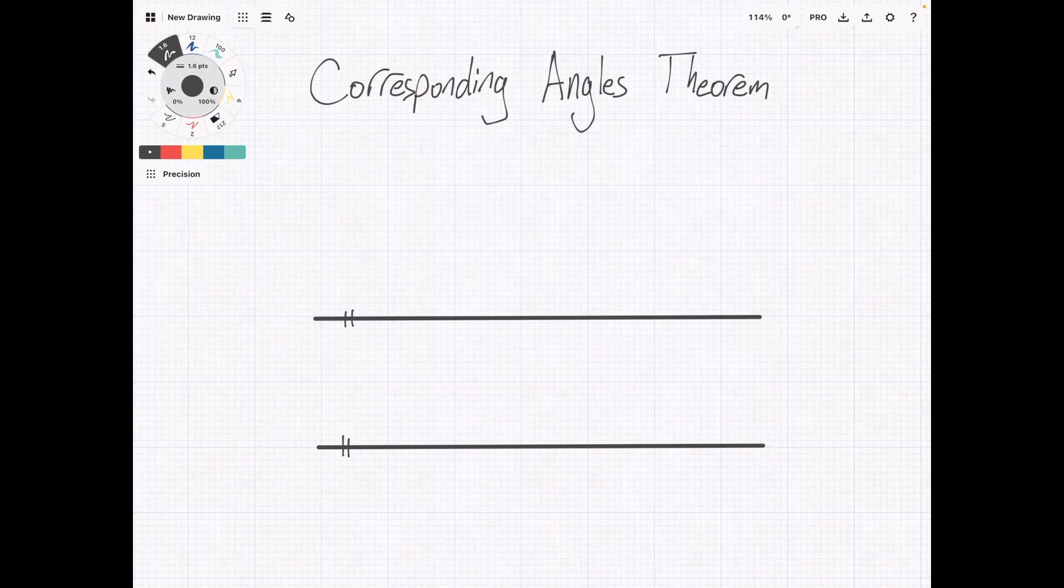The corresponding angles theorem states if a line intersects two parallel lines, then the corresponding angles are congruent.